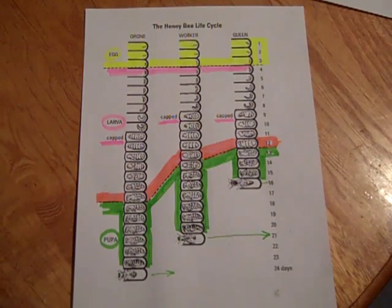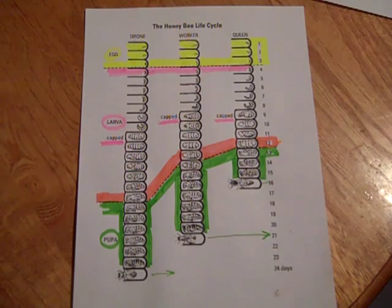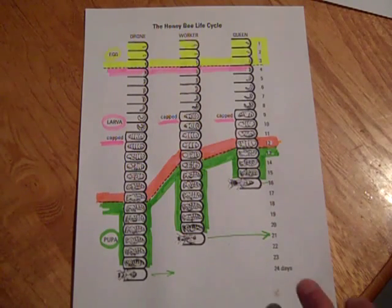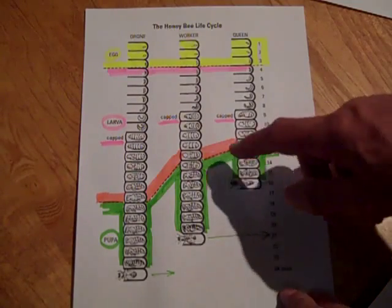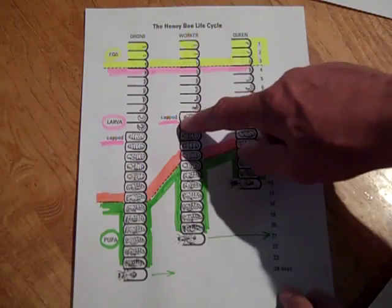So I hope that clears everything up and I will try my best to use the proper terminology when I'm speaking about larva that I say larva and when I'm talking about pupa, I'm talking about pupa. You can see that about halfway through the larva stage is where they get capped off.